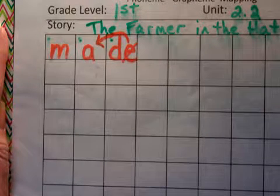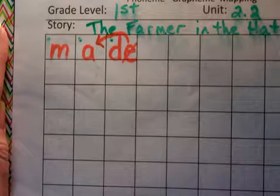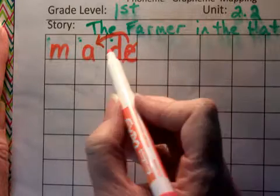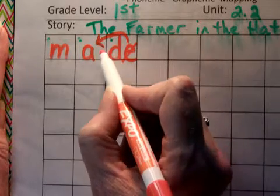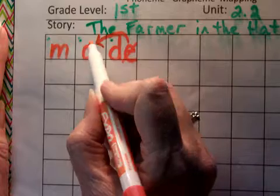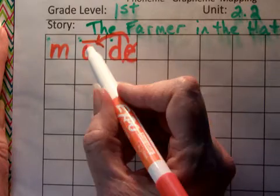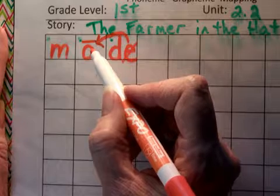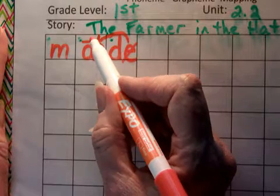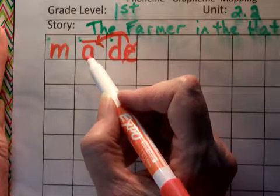The silent E can jump over one consonant, one of these letters, to make this one say its name. So we put the long mark over the top. That's called a macron. And the macron reminds us, it says its name, A.